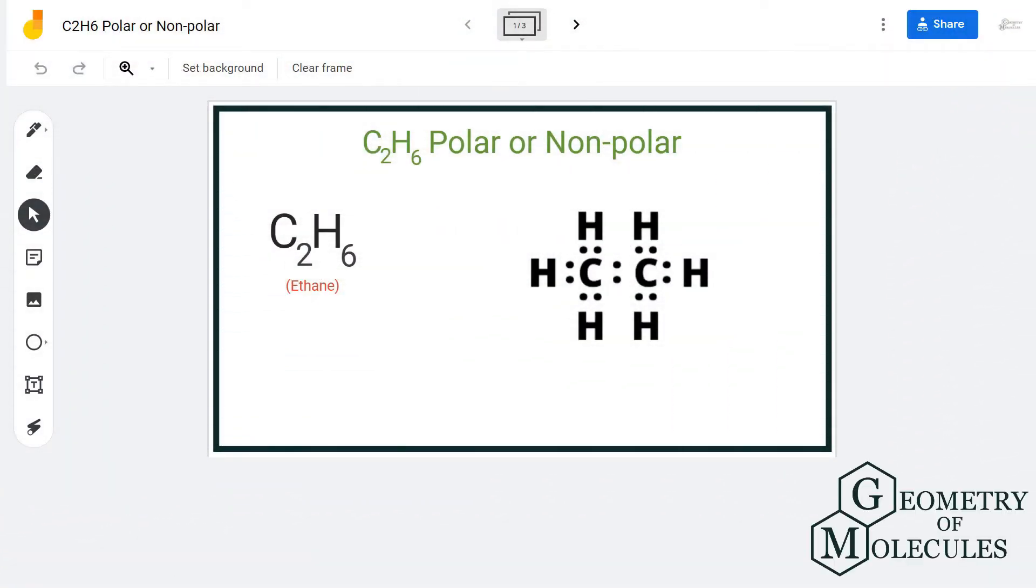Hi guys, today in this video we are going to determine the polarity for C2H6 molecule. It's a chemical formula for ethane and it is made up of two carbon atoms and six hydrogen atoms. To determine its polarity, we will first look at its Lewis structure followed by its shape.